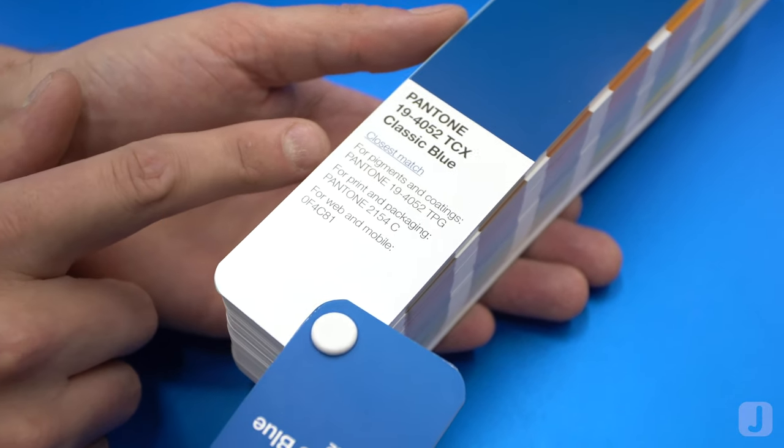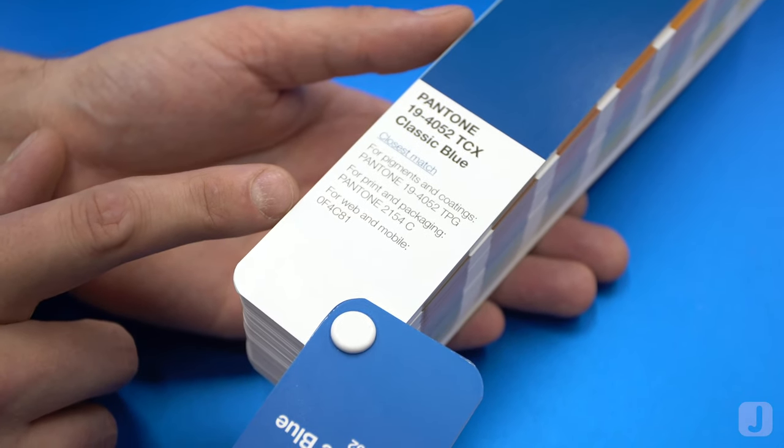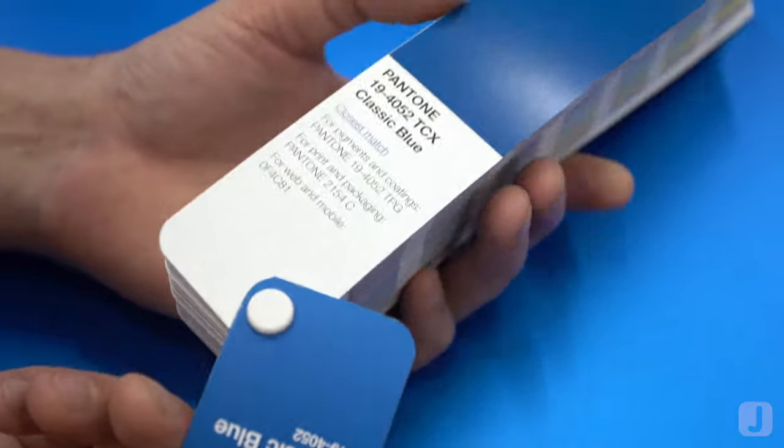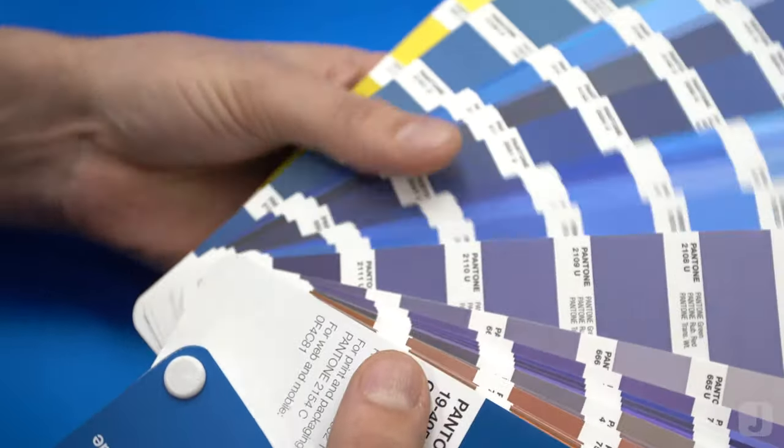19-4052 is the pigment and coding number. Print and packaging will match to 2154C, and web and mobile designers can use hex code 0F4C81.